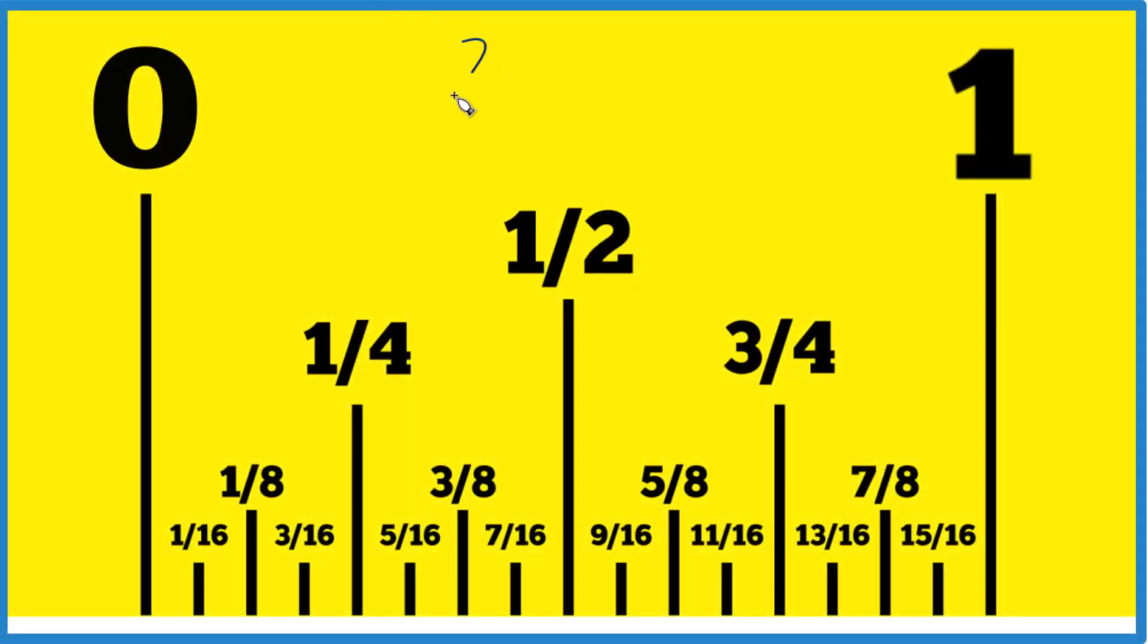Here's how you find the fraction 27/32nds of an inch on a ruler or on a tape measure here. So this is one inch, zero to one. Here's our one inch.